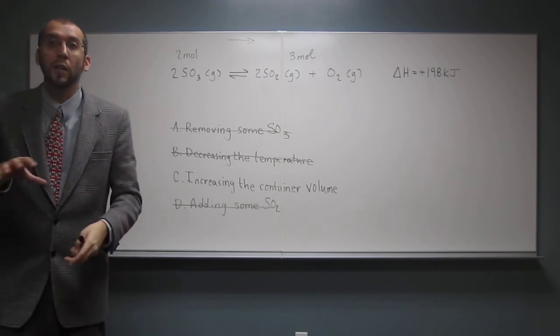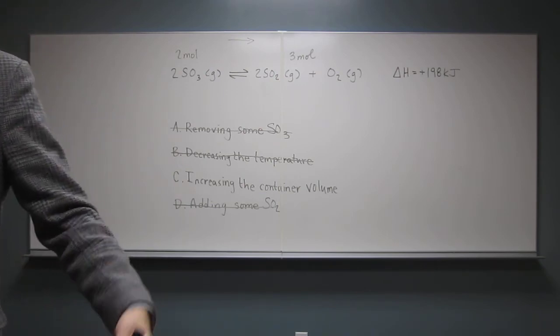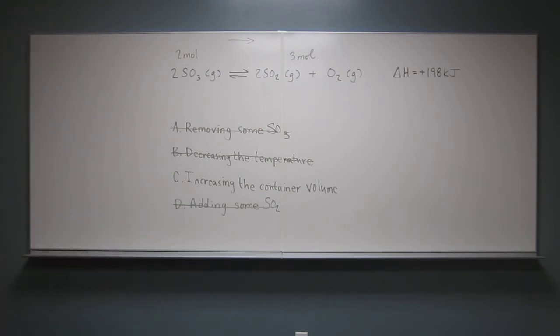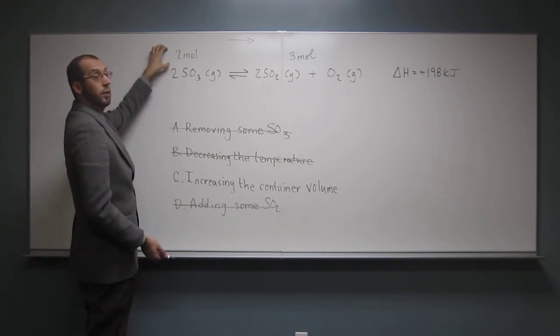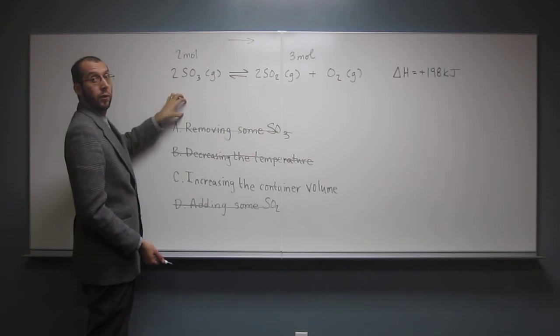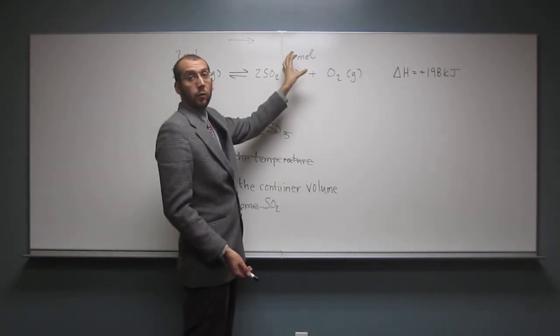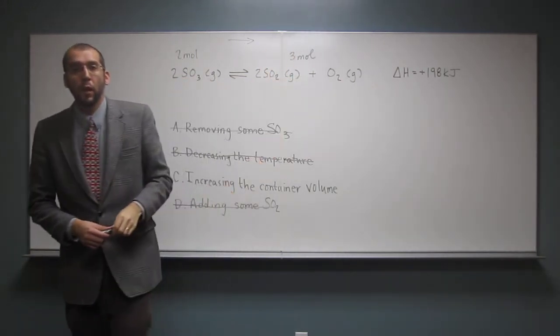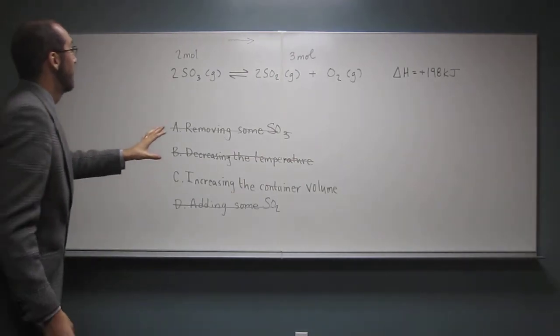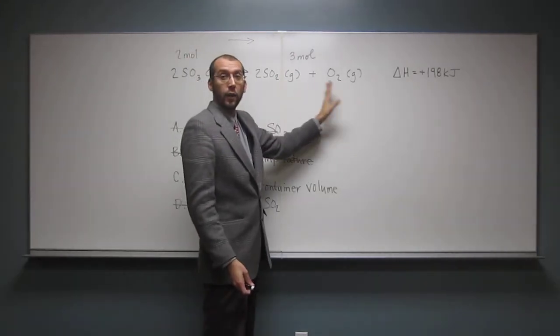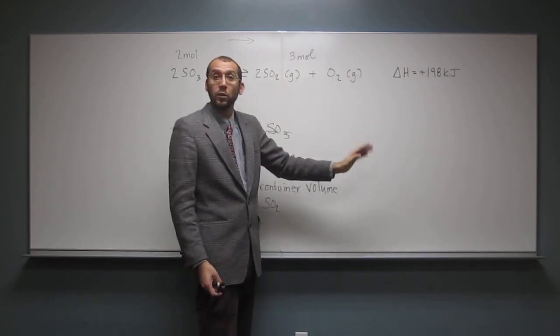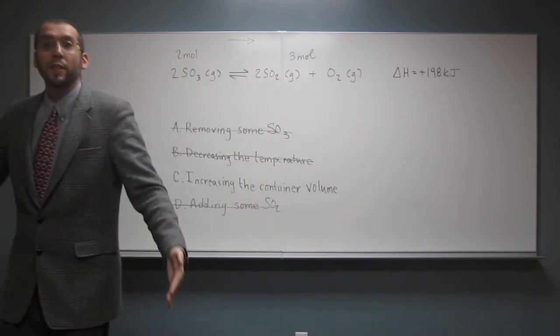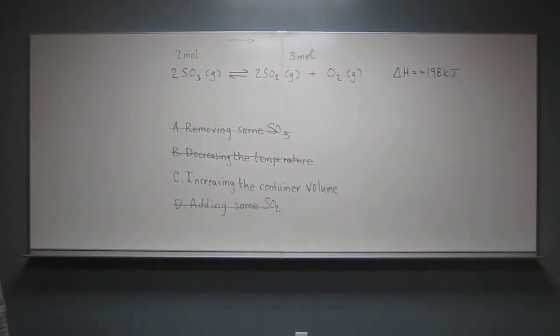Because remember, per mole, each one of these gases is the same volume. So if, let's just say this was at standard temperature pressure, it would be 22.4 times 2, which would be 44.8. This would be 22.4 times 3. So this set, the product side, needs a bigger volume to have the same amount of moles being contained in it. Does that make sense? As the reactants.